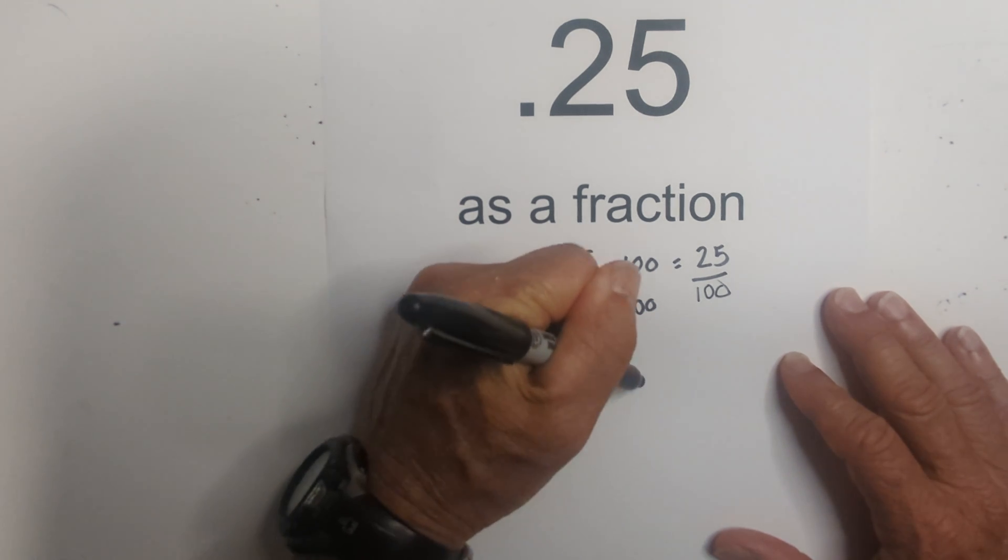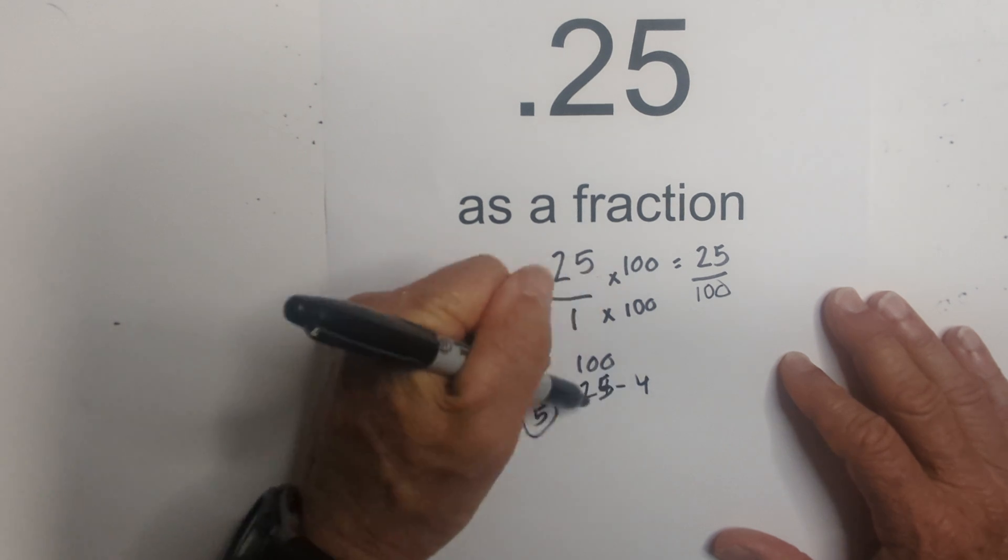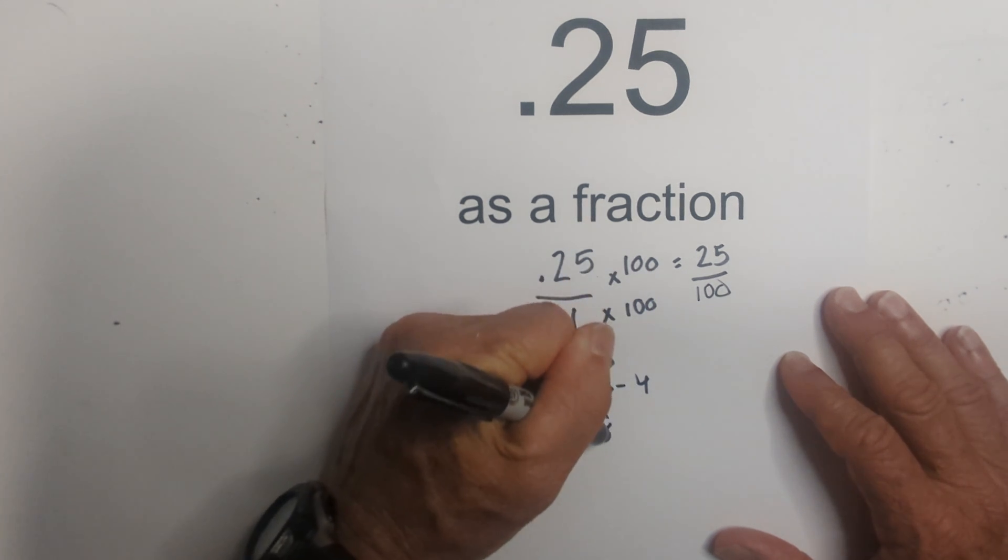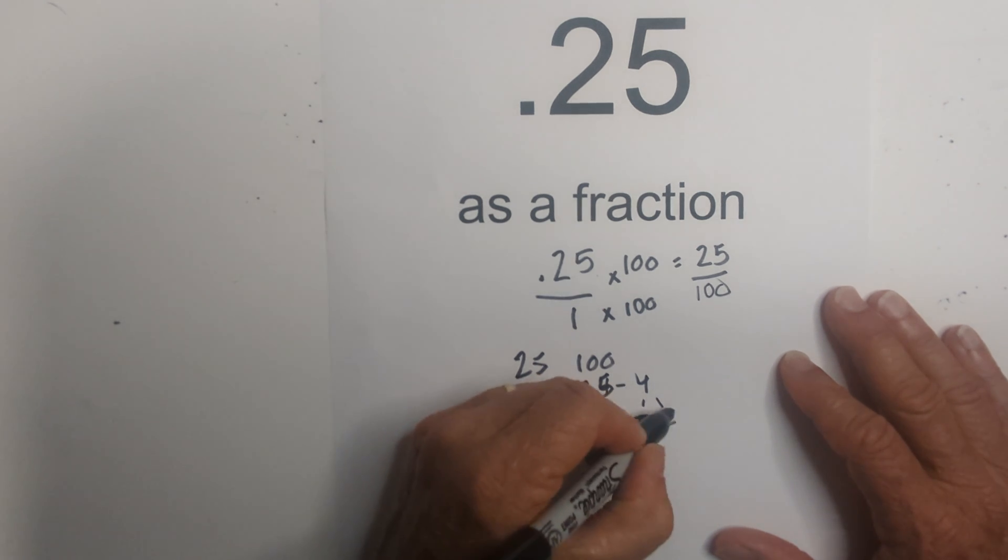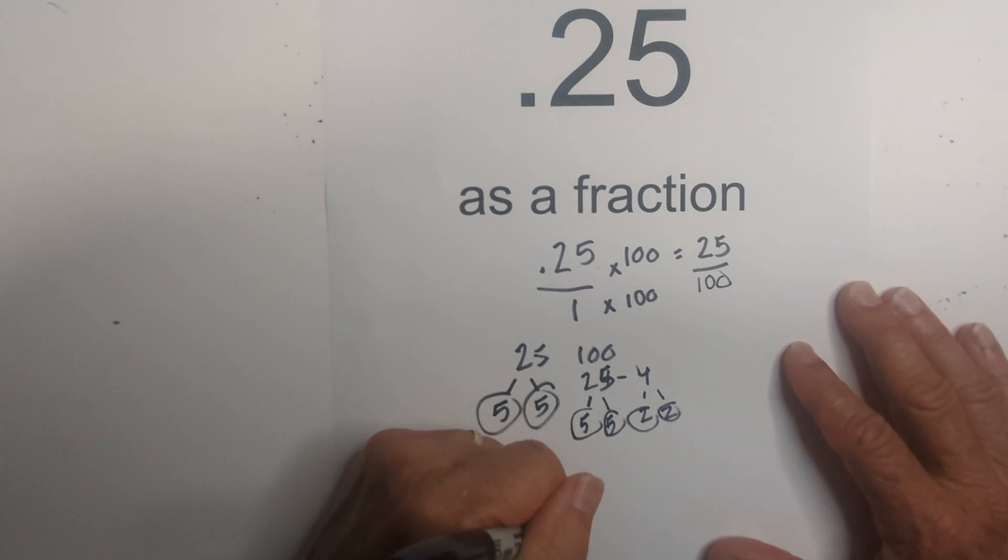And then 25 times 4 equals 100, and then 5 times 5, and then 2 times 2 equals 4. We're down to primes. And then I place them in this chart.